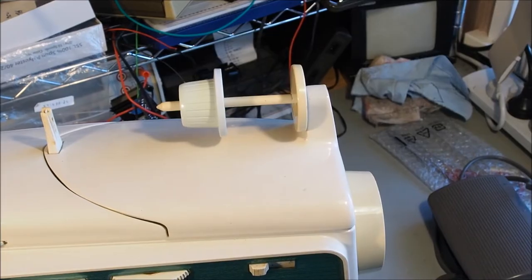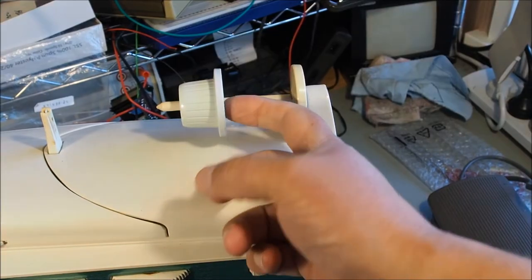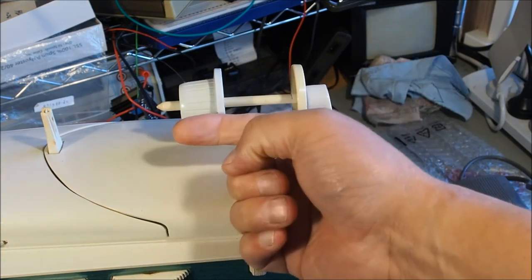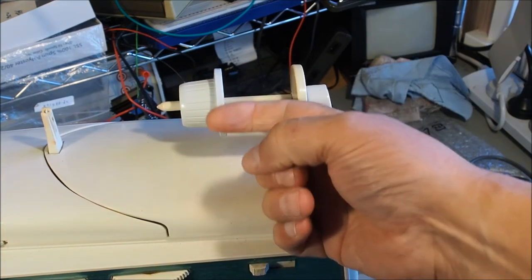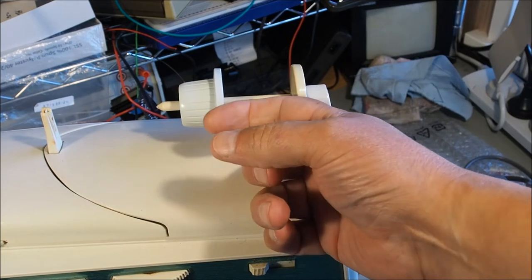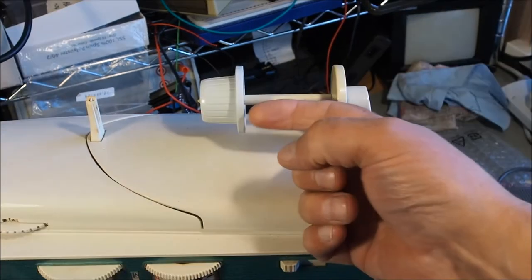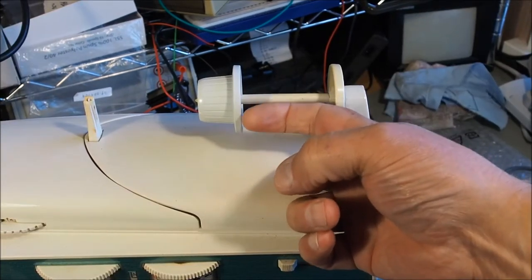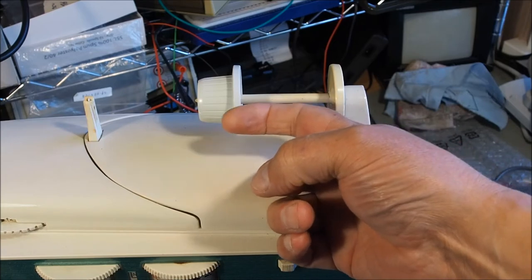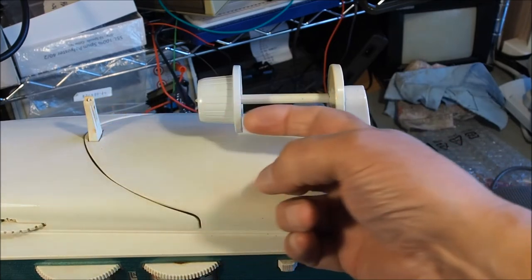The other feature Singer was fairly famous for was the horizontal spool holders. This is what they call the friction-free spool holder. With the spool lying horizontally like this, the thread comes off without friction.